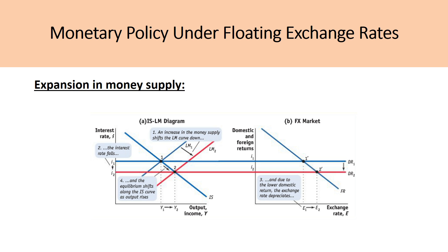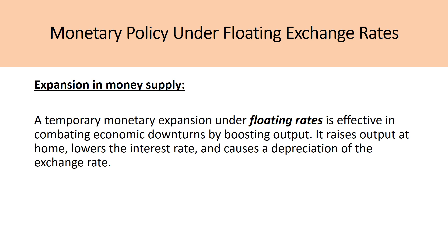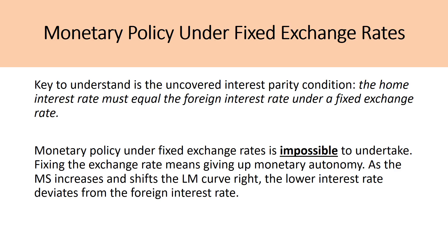So under a floating exchange rate, if you increase the money supply in the short term, it will lower the interest rate, it will expand output, it will create a real depreciation in the currency, and it will lower domestic returns. A temporary monetary expansion under floating rates is effective in combating economic downturns by boosting output. It raises output at home, lowers the interest rate, and causes a depreciation of the exchange rate.